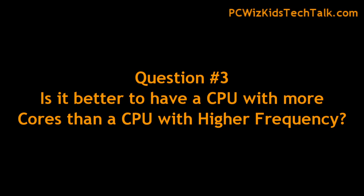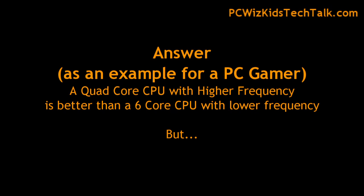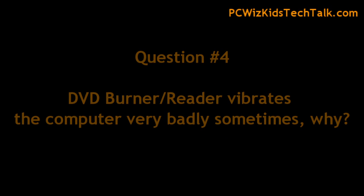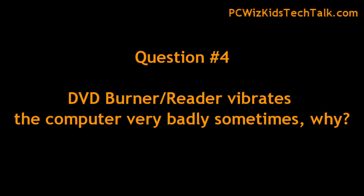Question three: is it better to have a CPU with more cores or a CPU with higher frequency? It all depends. For a PC gamer, it's better to have a quad-core CPU with high frequency — that's good enough. But if you're a graphic artist, programmer, or doing a lot of multitasking and multi-threading, you want a hyper-threaded, turbo-enabled, multi-core CPU.